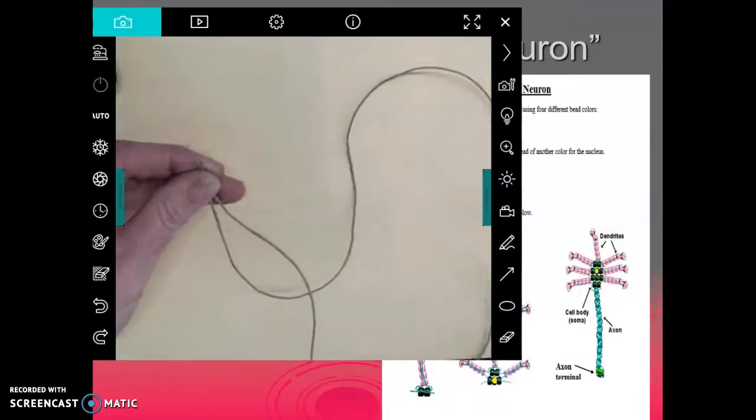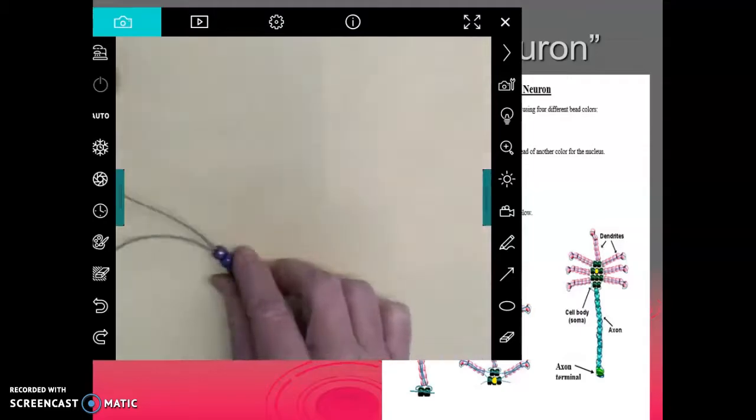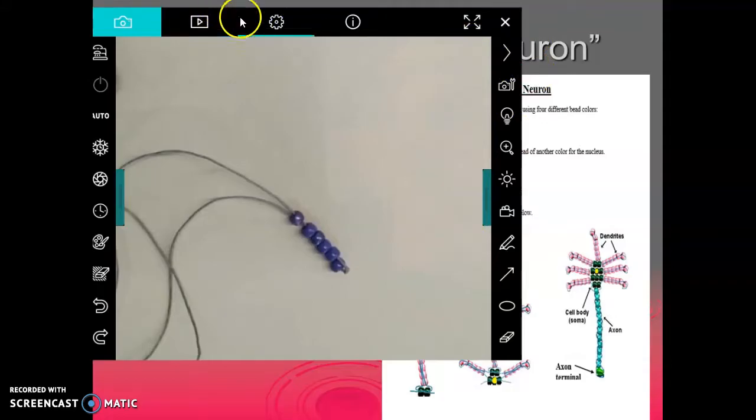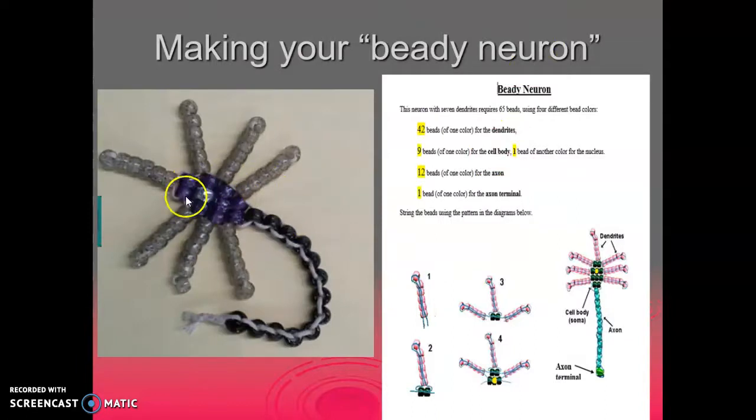So when you look at this end, you're holding these and here is your first set of dendrites. Then what you're going to do is take two beads of your next color, which should represent... Let me close this off real quick here. It should represent... The next two are going to represent right here, which is your soma color.